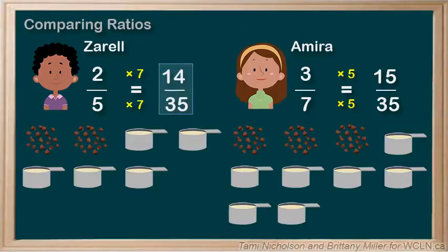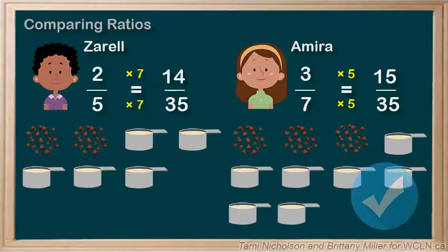14 thirty-fifths is less than 15 thirty-fifths. So Amira's cookies have a higher ratio of chocolate chips. So I'd eat her cookies if I want to have the most chocolate chips in my cookies.